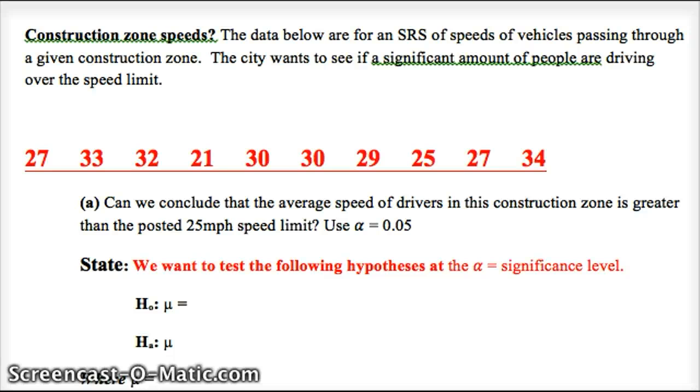So here we have data for an SRS of speeds of vehicles passing through a given construction zone. The city wants to see if a significant amount of people are driving over the speed limit. So they take this SRS, and here's the speeds that they get.